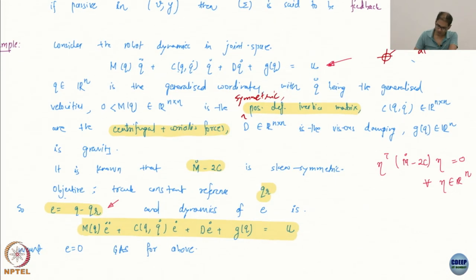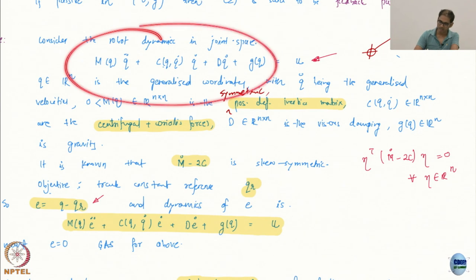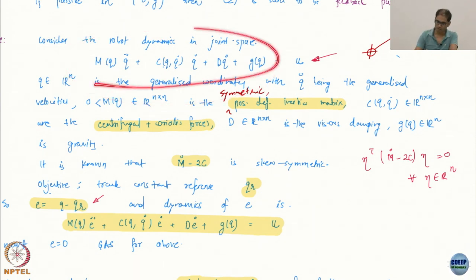And one of the things that is known for, because we have arrived at this via Lagrangian modeling, is that M dot minus twice C is a skew symmetric matrix. This is known for this robotic type system. It will always hold. This is nothing very unusual, system property. And what does it mean for if a matrix is skew symmetric, then the corresponding quadratic form is always 0. This is again a property of skew symmetric matrices.